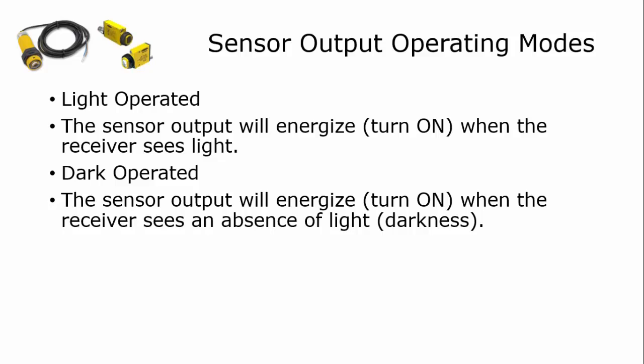There are also two modes of operation for a sensor. Some sensors can be changed from what's called light operated to dark operated. Light operated says that the sensor output will be energized or on when the receiver sees light. You've got to remember, sensors are switches. They turn on and off. It's a discrete device.